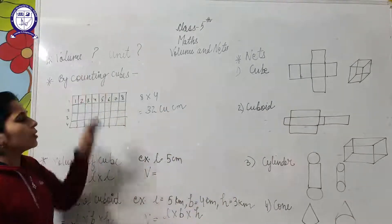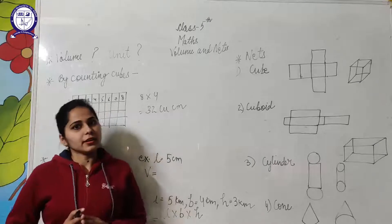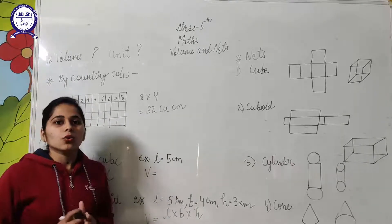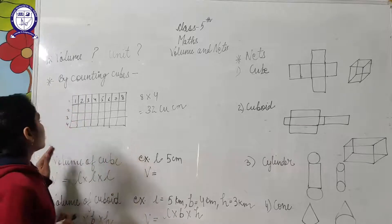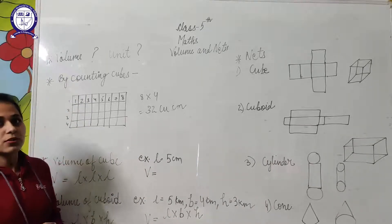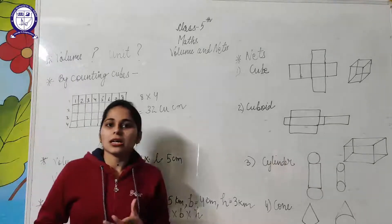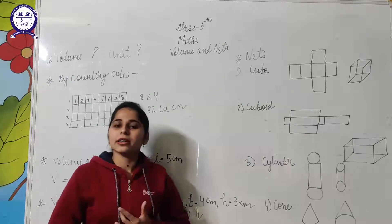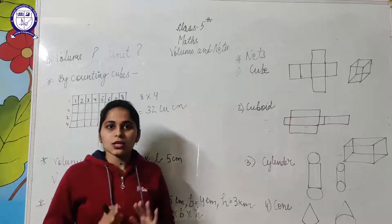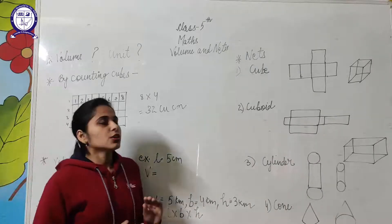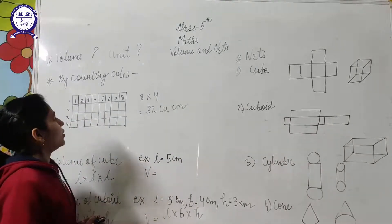First of all, what is volume? Volume is the space occupied by any 3D figure, like cube, cuboid, cone, cylinder. Those 3D figures occupy some space. That space is known as volume. Suppose you have one glass of water and you fill 500 milliliters of water in that glass. That 500 milliliters is the volume of that glass.